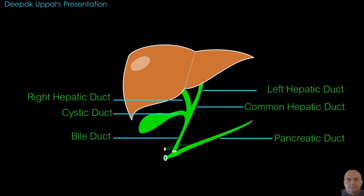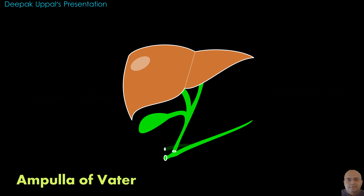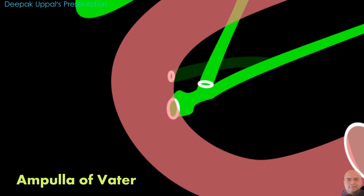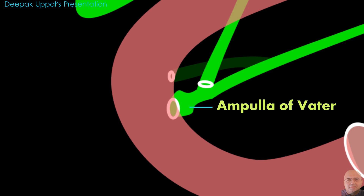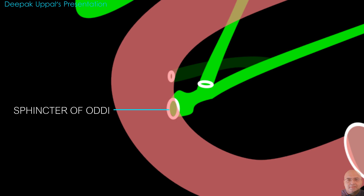The bile duct is joined by the main pancreatic duct, and together they open into a small ampulla known as the ampulla of Vater. An ampulla is a sac-like enlargement of the duct. The ampulla opens into the lumen of the duodenum by means of a small papilla known as the major duodenal papilla — a papilla being a protuberance or raised surface. The terminal parts of both ducts and the ampulla are surrounded by circular muscle known as the sphincter of the hepatopancreatic ampulla, also known as the sphincter of Oddi.